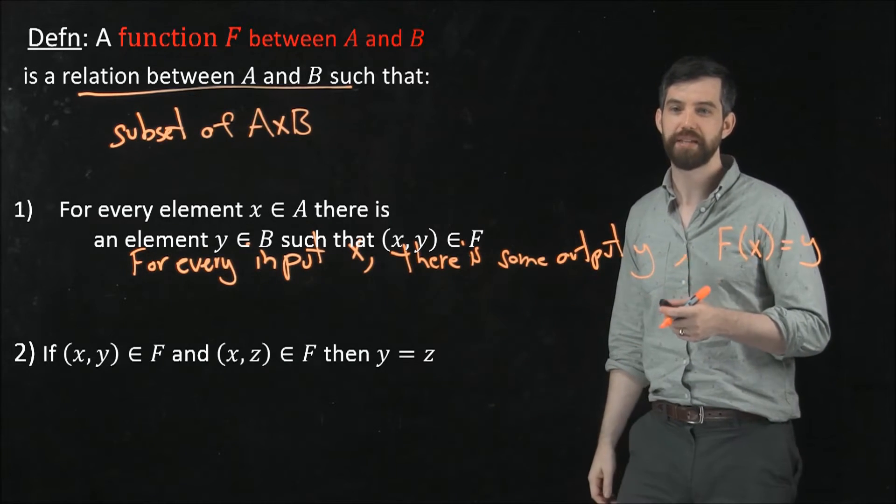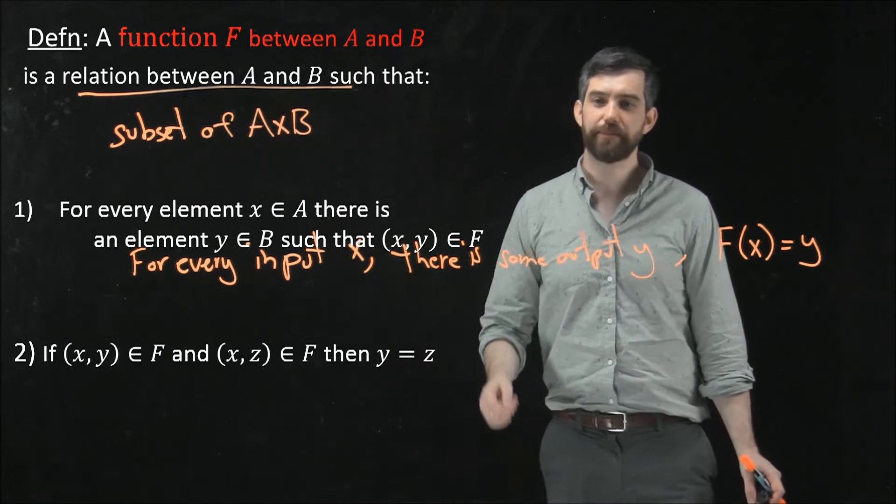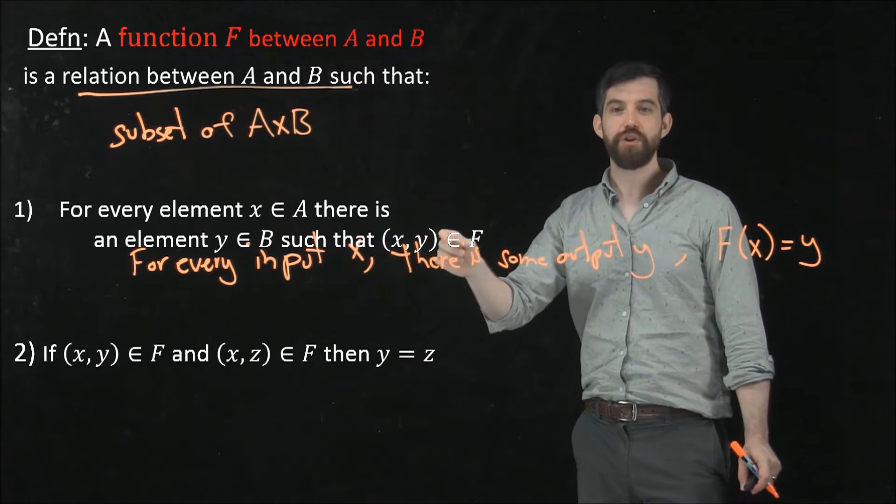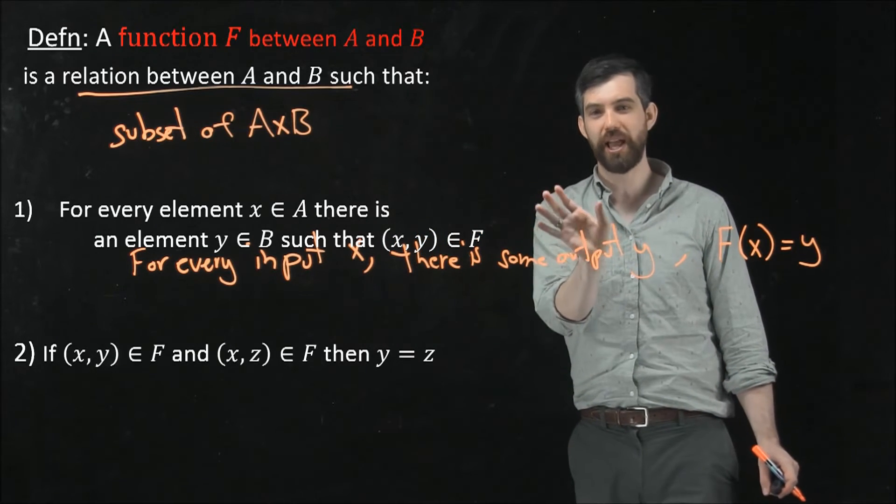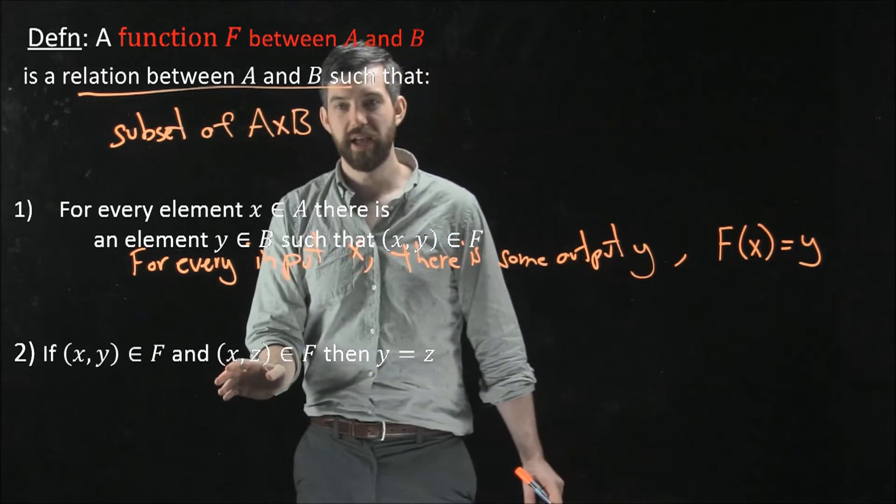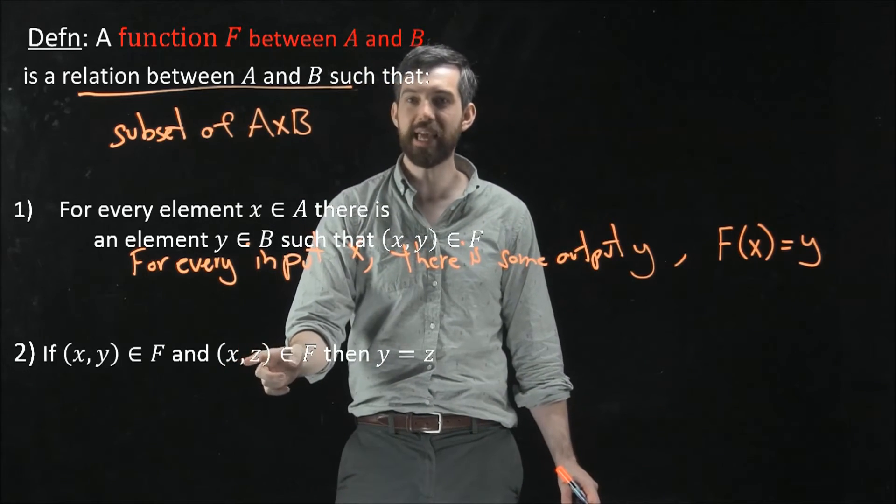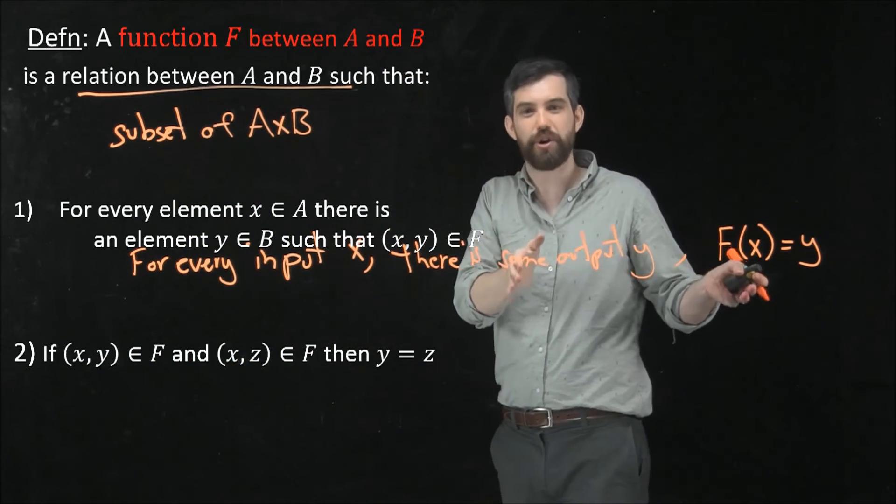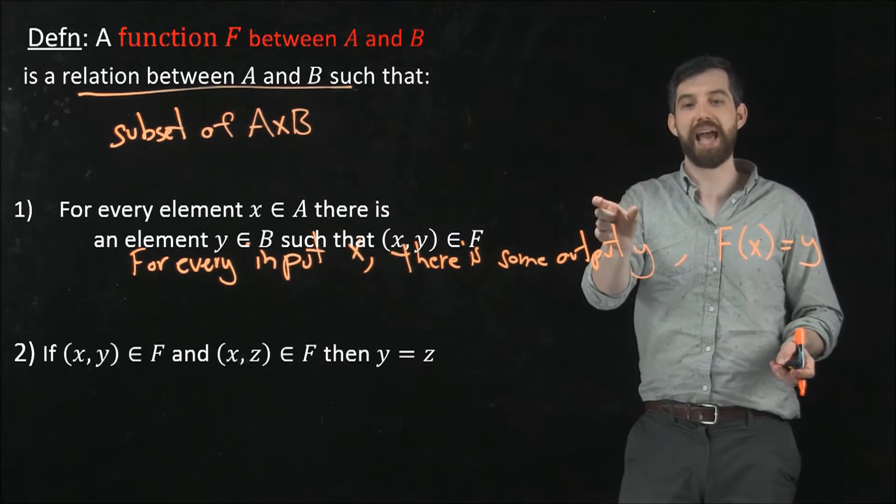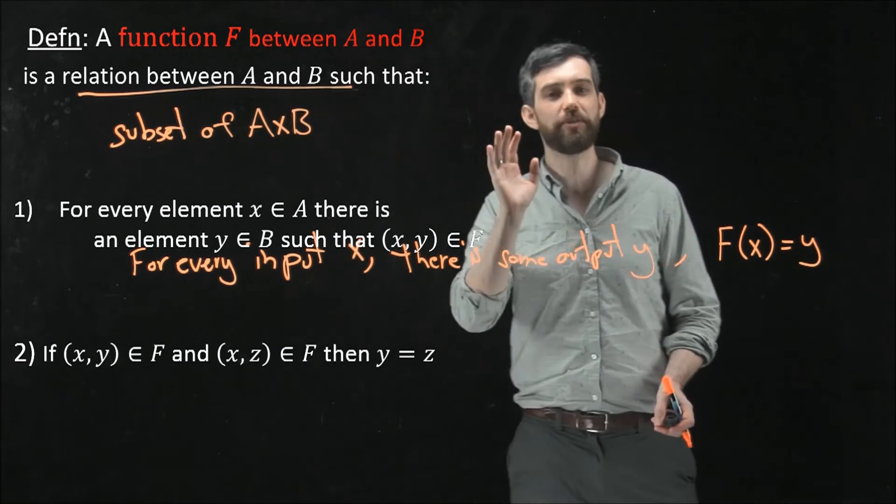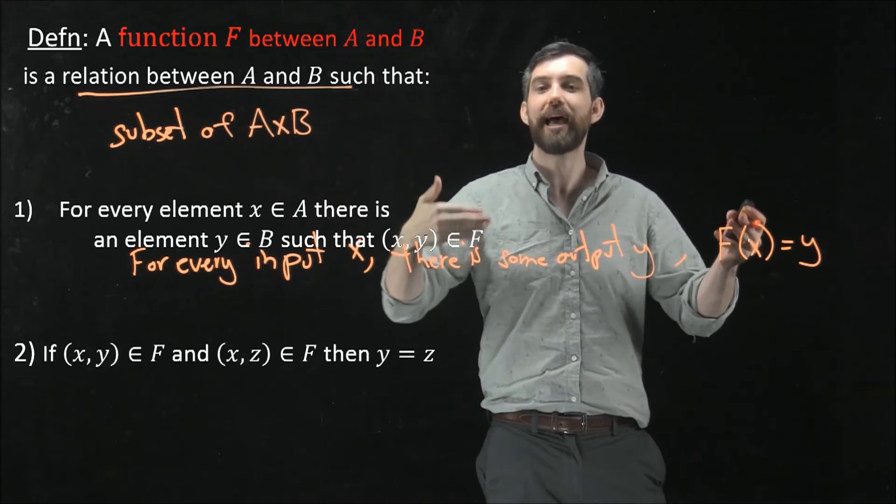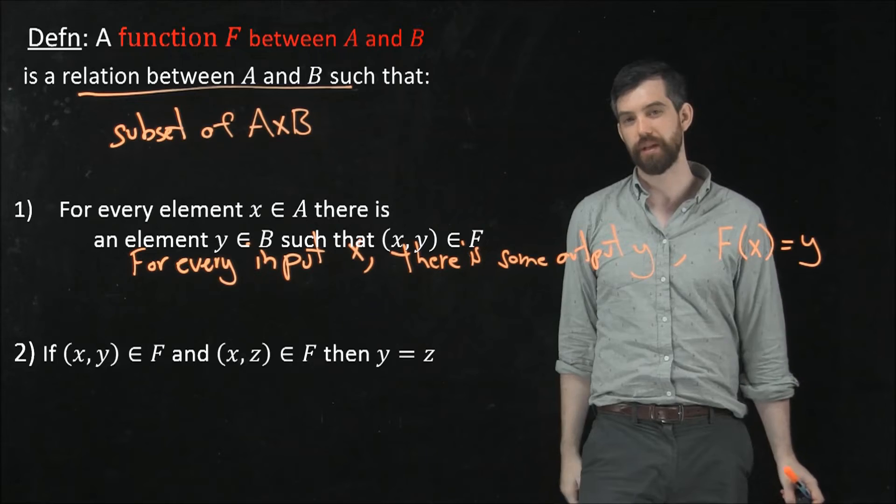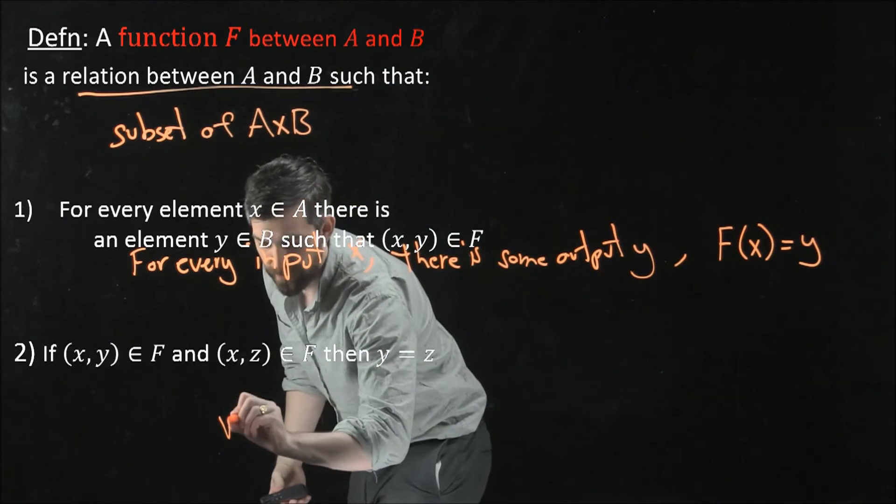And then the second property that I'm going to demand is this. It says if you have one pairing, an input-output pairing, and then you have another input-output pairing, and you'll notice down here that this is going to have the same x as this one did. They've got the same x's, but they've got a difference in the second component. So you've got both x,y and x,z. Well, then it must be the case that those second components, these y and the z, that they truly are equal. And this is the analog of the vertical line test.